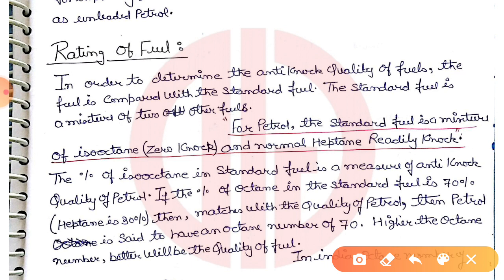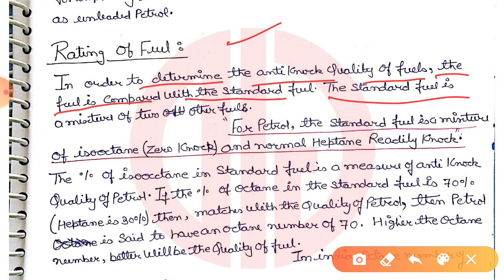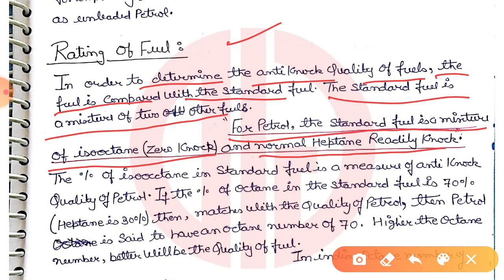In order to determine the anti-knock quality of a fuel, the fuel is compared with a standard fuel. For petrol, the standard fuel is a mixture of two fuels: isooctane, which has zero knocking tendency, and normal heptane, which has a readily knock condition. This mixture is used as the standard fuel and then the anti-knock quality of the fuel is measured.